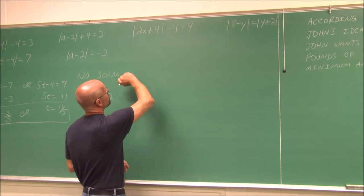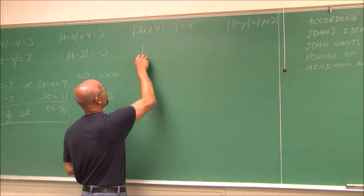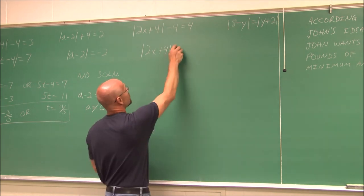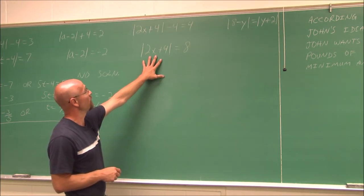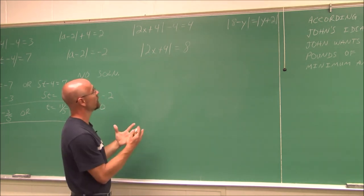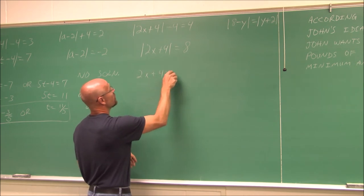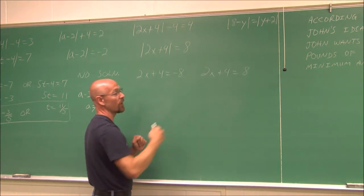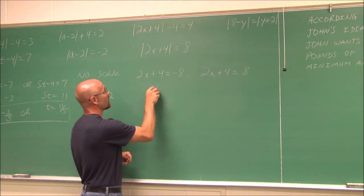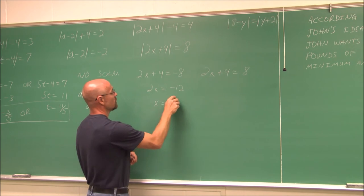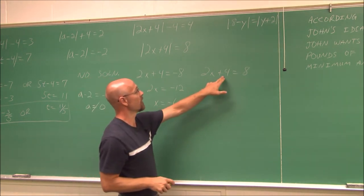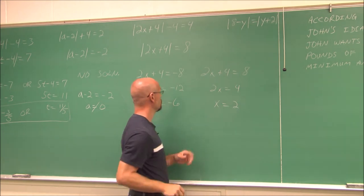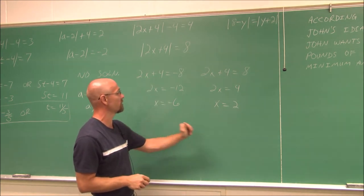We have the absolute value of 2x plus 4 minus 4 equals 4. First, isolate the absolute value by adding 4 to both sides, giving the absolute value of 2x plus 4 equals 8. We write two equations: 2x plus 4 equals negative 8, or 2x plus 4 equals positive 8. Subtracting 4 and dividing by 2 gives x equals negative 6 from the first, and x equals 2 from the second.